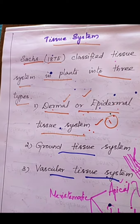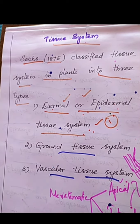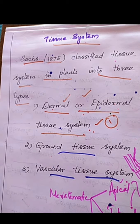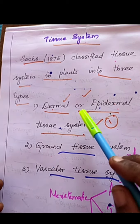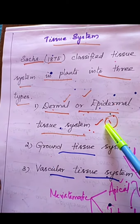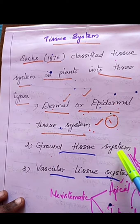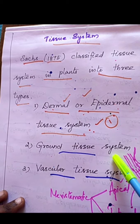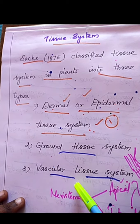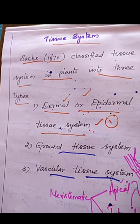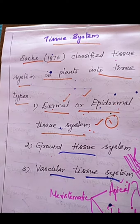The dermal or epidermal tissue system is the outermost layer of the plant body — the entire plant body is covered by it. The second type is the ground tissue system, and the third is the vascular tissue system. These are the three main types of tissue system that occupy the plant body.